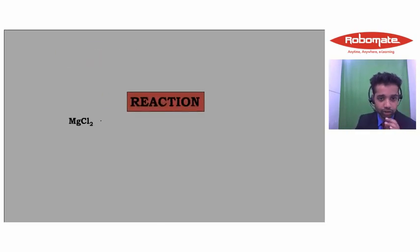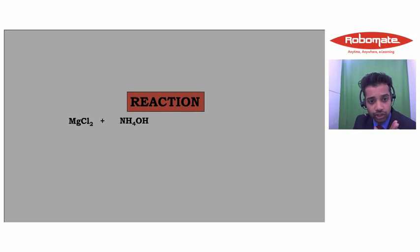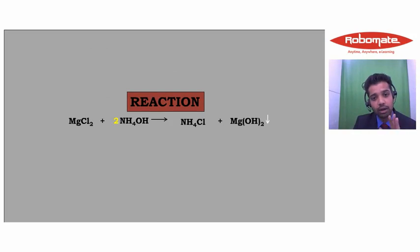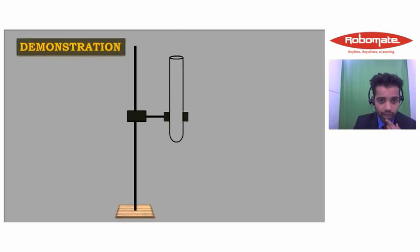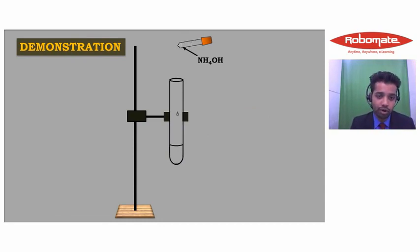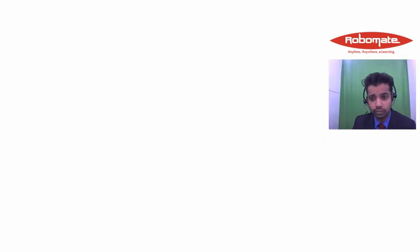The demonstration is similar to the NaOH demonstration, because it gives a dull white insoluble precipitate. You take MgCl2, add it with a dropper, then add NH4OH with a dropper, and you will see a dull white precipitate forming.